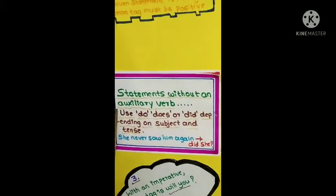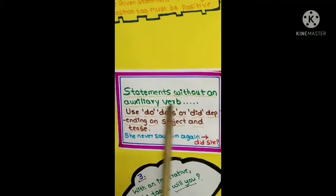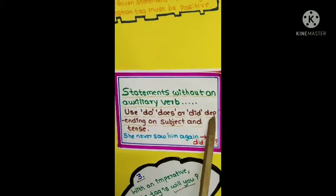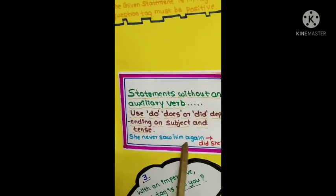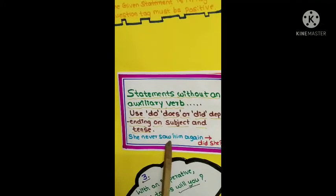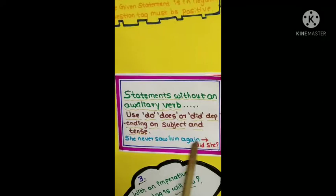Statement without an auxiliary verb. When statement without an auxiliary verb, we use do, does or did, depending on subject and tense. She never saw him again. This is in second form verb. So, we use did she.